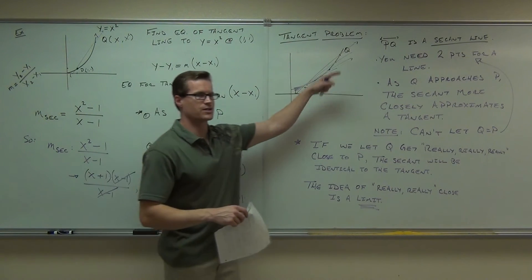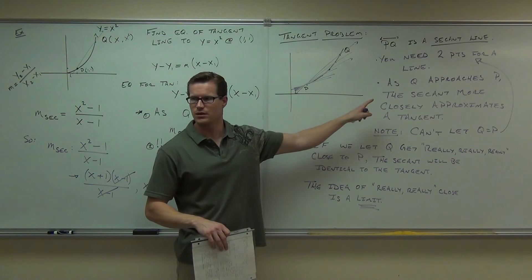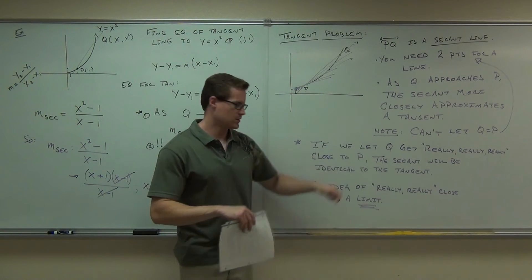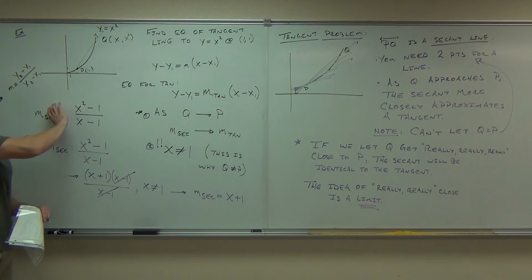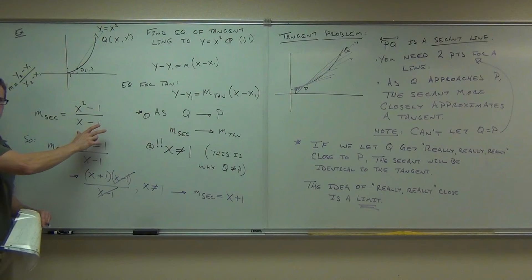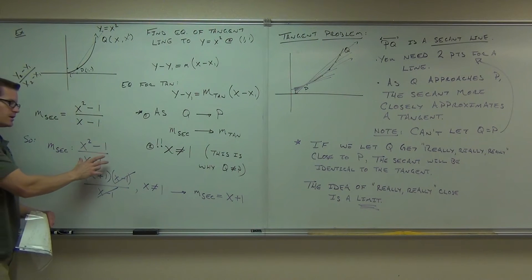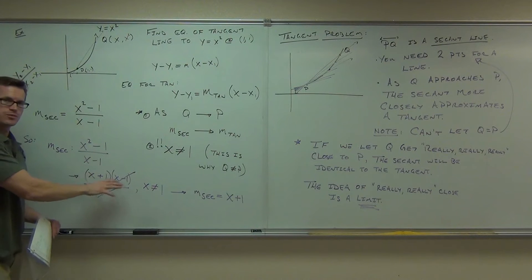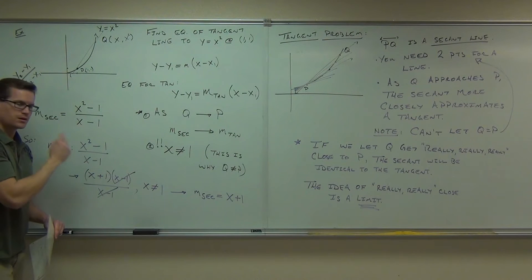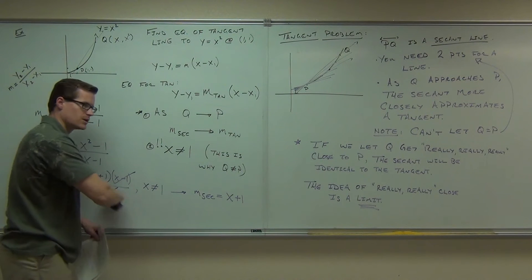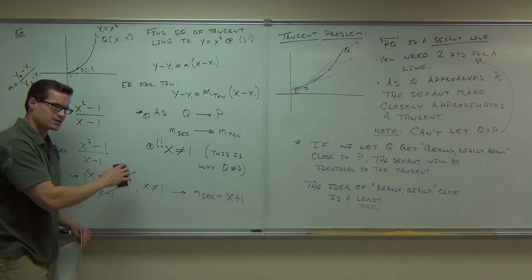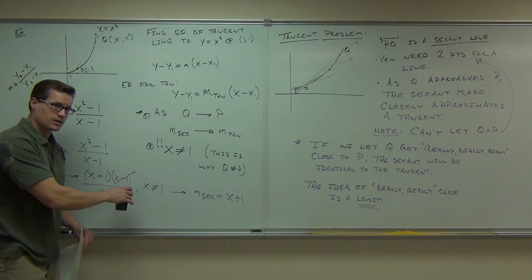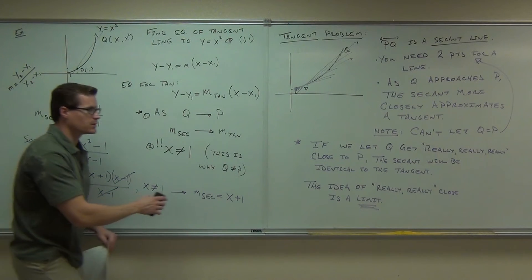Were there any questions on this? Because I have to erase it. Is this making sense to you? Do you see where the slope formula came from? Do you see how we can factor and simplify it? We're not eliminating the domain issue because we're actually not letting x get equal to 1 — it's just getting really close to it.